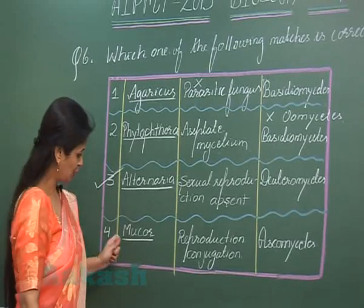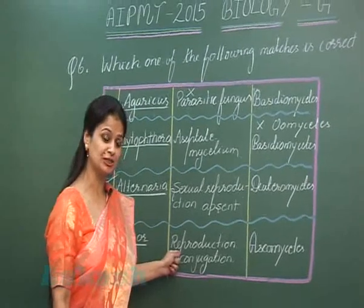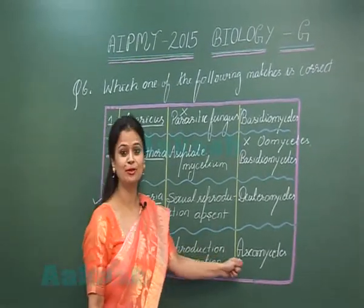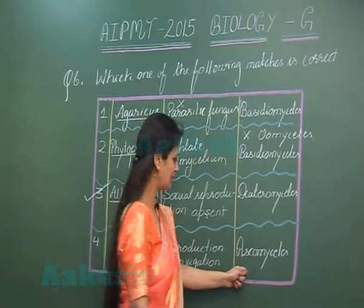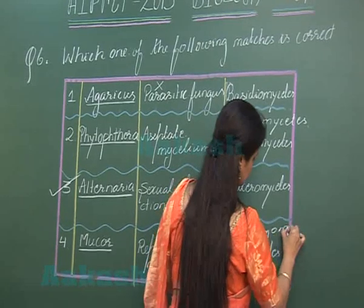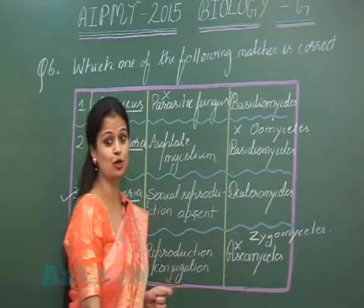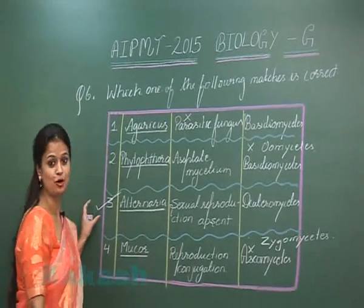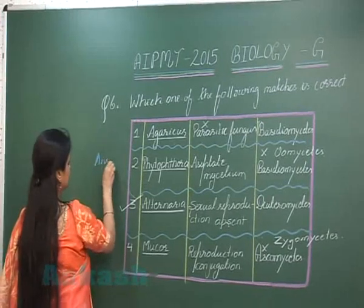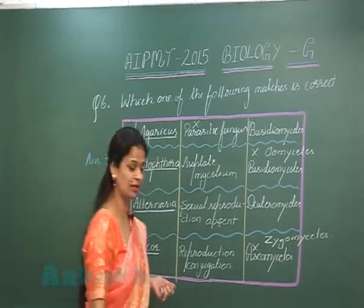Option four states that Mucor undergoes sexual reproduction through conjugation, which is correct, but it is incorrectly placed in Ascomycetes. Mucor is actually a member of Zygomycetes, so this option is wrong. Therefore, the correct answer for question six is option three. Now let's discuss question number seven.